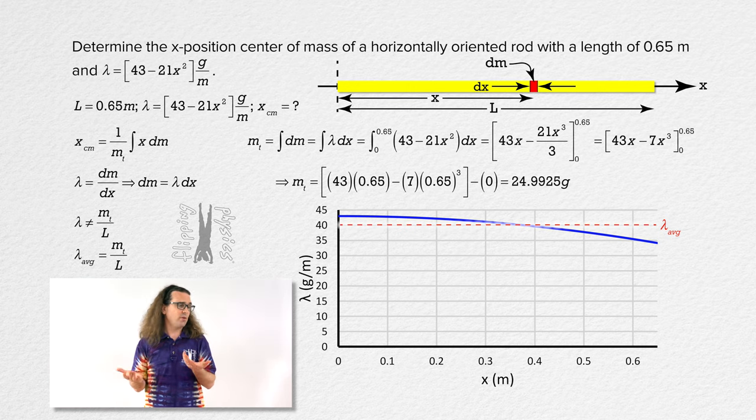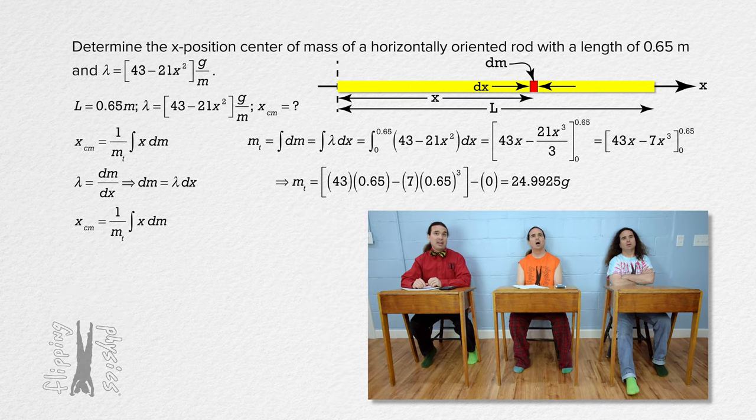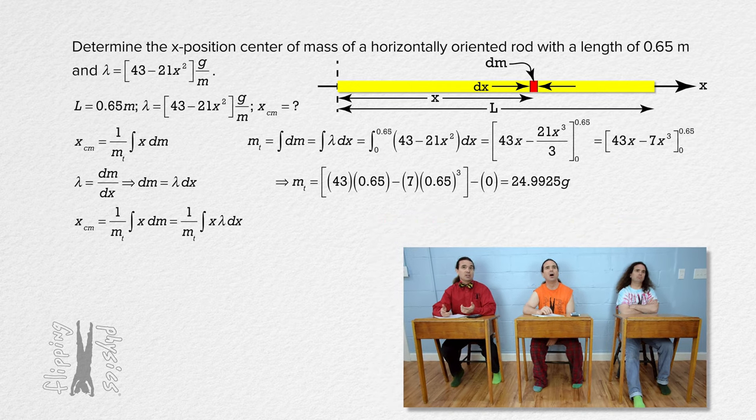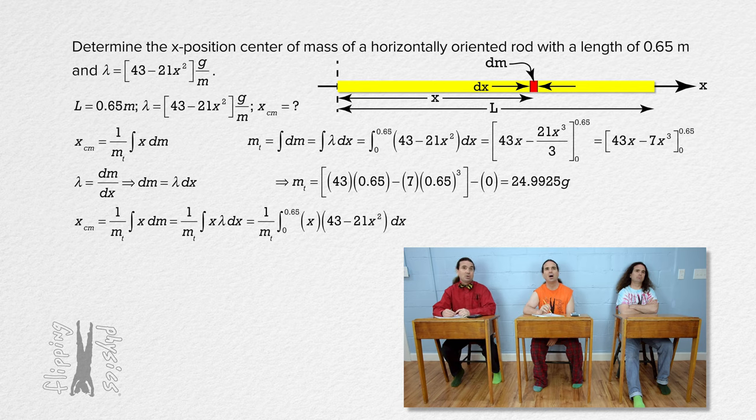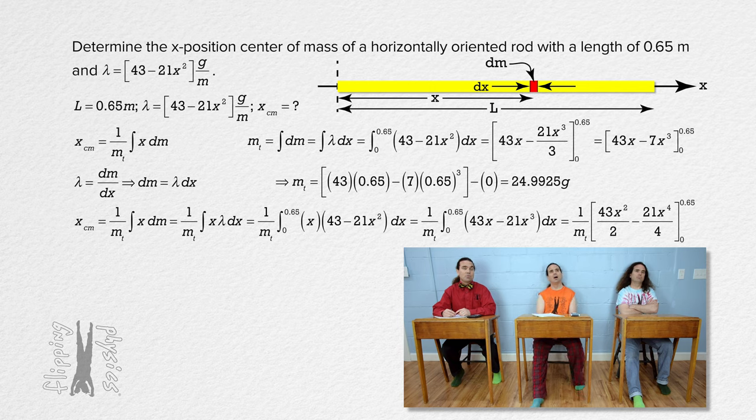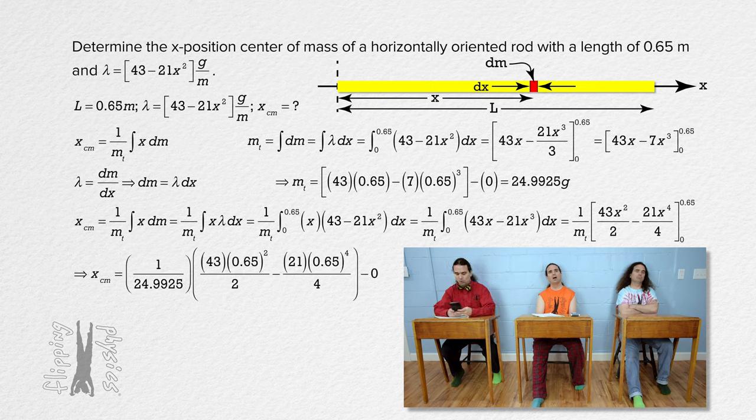Billy, please find the x position center of mass of the rod. At this point, we use the equation x position center of mass equals the inverse of the total mass of the rod times the integral of x position with respect to mass. This is very similar to what Bo just did. We substitute in the limits of 0 and 0.65 meters and lambda of 43 minus 21x squared. Multiply the x through to get 43x minus 21x cubed. Take the integral to get the inverse of the total mass of the rod times the quantity 43x squared over 2 minus 21x to the 4th power over 4. With the same limits. Substitute in the limits and we get, wait for it, bep, bep, bep, bep, bep.